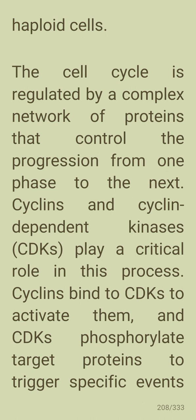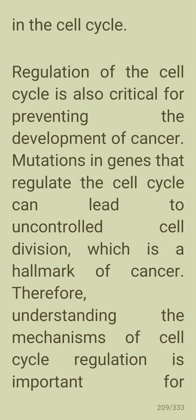Cyclins and cyclin-dependent kinases play a critical role in this process. Cyclins bind to CDKs to activate them, and CDKs phosphorylate target proteins to trigger specific events in the cell cycle. Regulation of the cell cycle is also critical for preventing the development of cancer. Mutations in genes that regulate the cell cycle can lead to uncontrolled cell division, which is a hallmark of cancer.